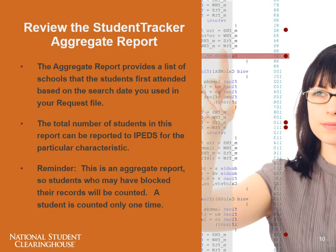After you submit your request file, it goes through our matching process and the Clearinghouse returns reports to your FTP. We return three reports: the detail report, a control report, and an aggregate report. The aggregate report gives you a list of schools that the students first attended, as an aggregate number of the students we were able to find in the database. Because it's aggregate, it will include a count for students who may have been blocked, so you're getting a more comprehensive number than if you just used the detail report. This counts the students one time and shows you the total number that you could report in the IPEDS.